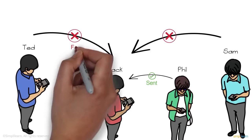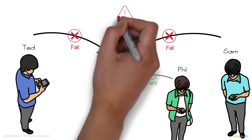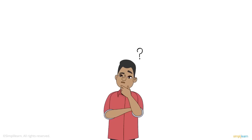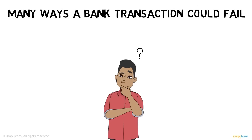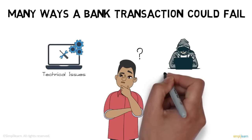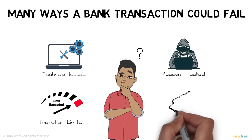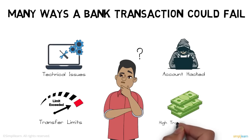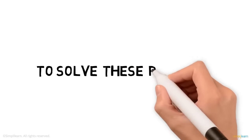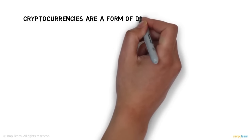Then Ted and Sam send their respective shares to Jack, but their transactions don't go through. The failed transaction cites some issues at the bank. That's when Jack comes to know about the many ways a bank transaction could fail — technical issues, hacked accounts, daily transfer limits being exceeded, and sometimes additional transfer charges.